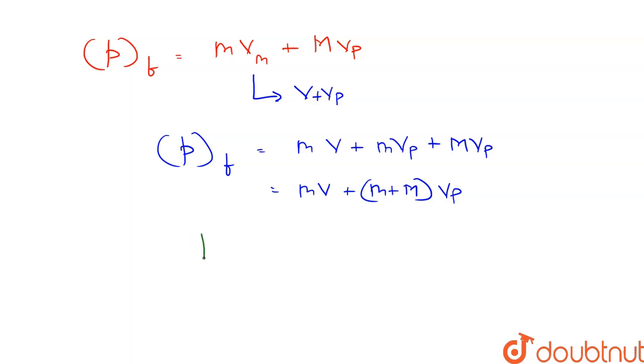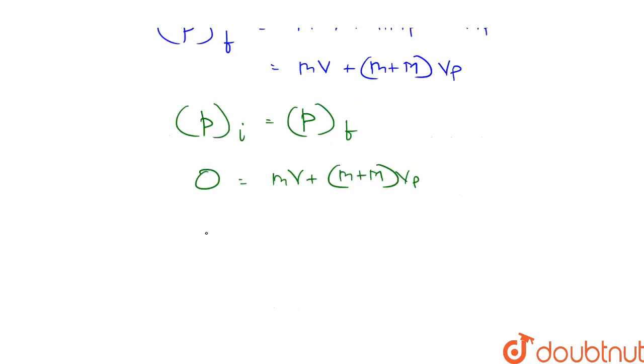According to conservation of momentum, pi = pf. Therefore, 0 = mv + (m + M)vp, which gives vp = -mv/(m + M).